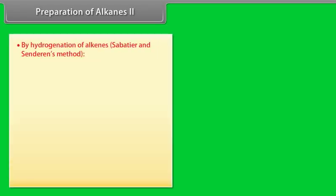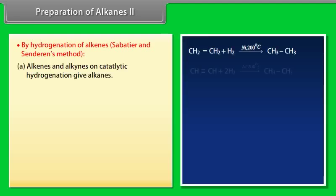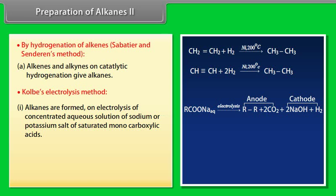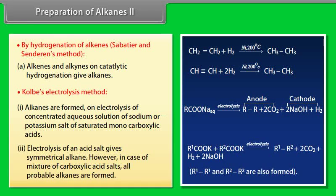By hydrogenation of alkenes, Sabatier and Senderens' method: Alkenes and alkynes on catalytic hydrogenation give alkanes. Kolbe's electrolysis method: Alkanes are formed on electrolysis of concentrated aqueous solution of sodium or potassium salt of saturated monocarboxylic acids. Electrolysis of an acid salt gives symmetrical alkane. However, in case of mixture of carboxylic acid salts, all probable alkanes are formed.